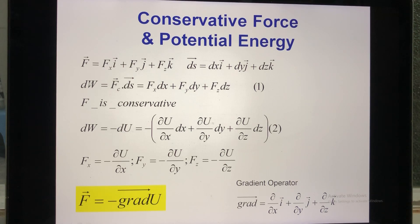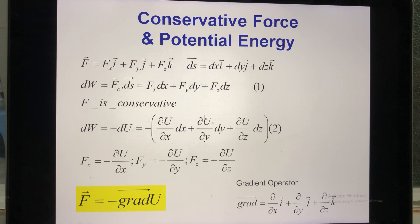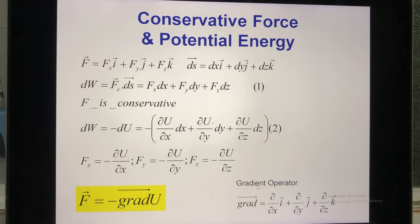So I have two formulas for work: one based on force and distance, and one based on potential energy. Comparing them, the coefficient before dX in both expressions gives FX = −dU/dX. Similarly, FY = −dU/dY and FZ = −dU/dZ. In vector form, this is written as: vector F equals minus grad U, where U is the potential energy. Grad is called the gradient operator.